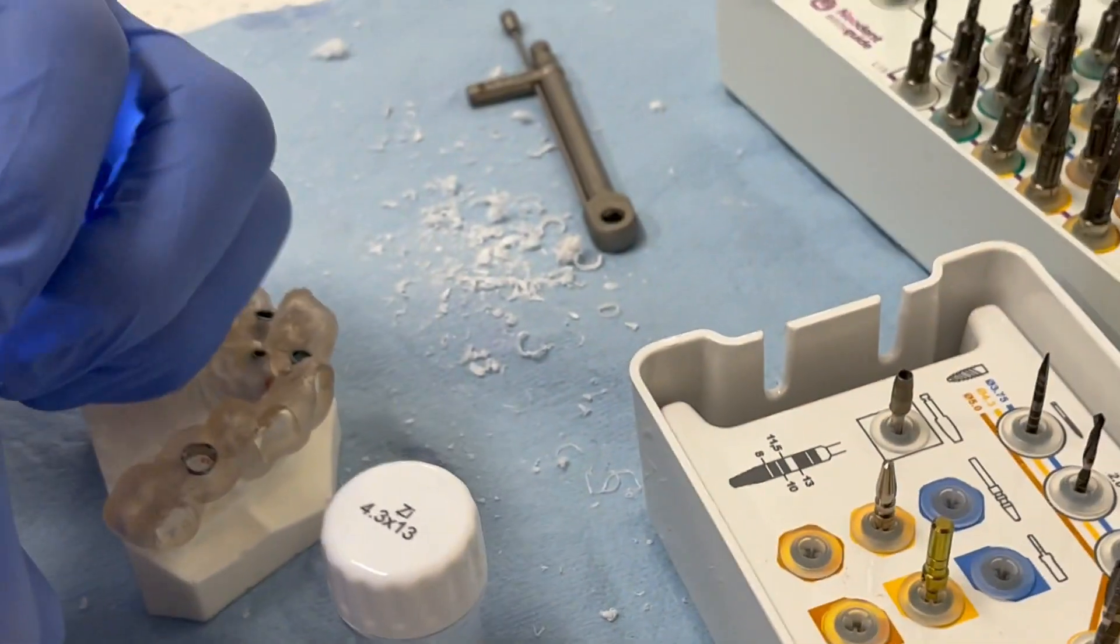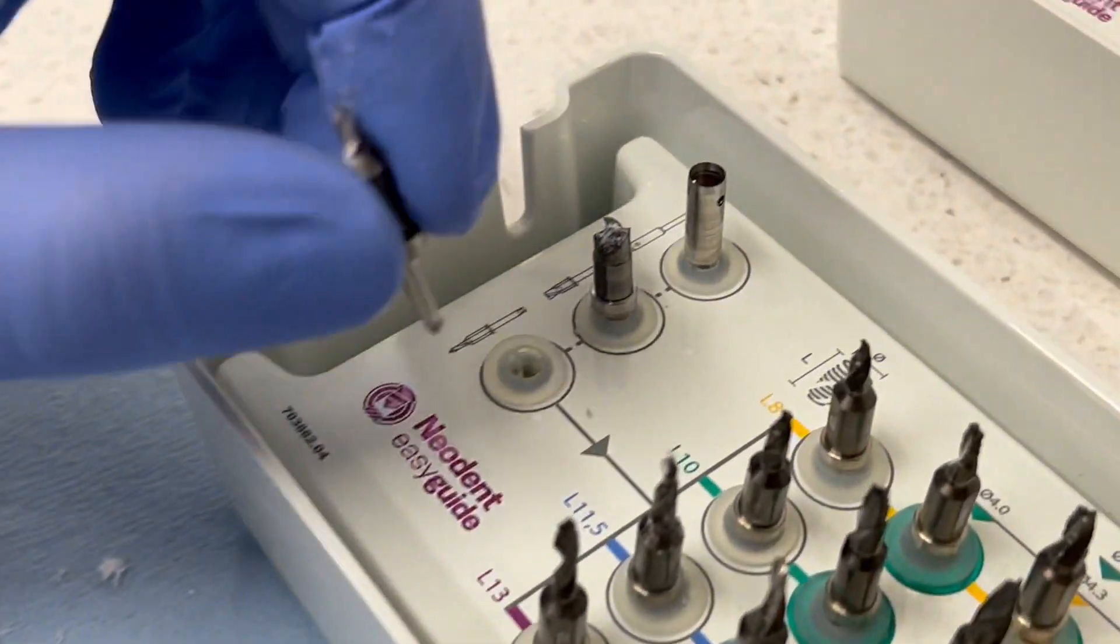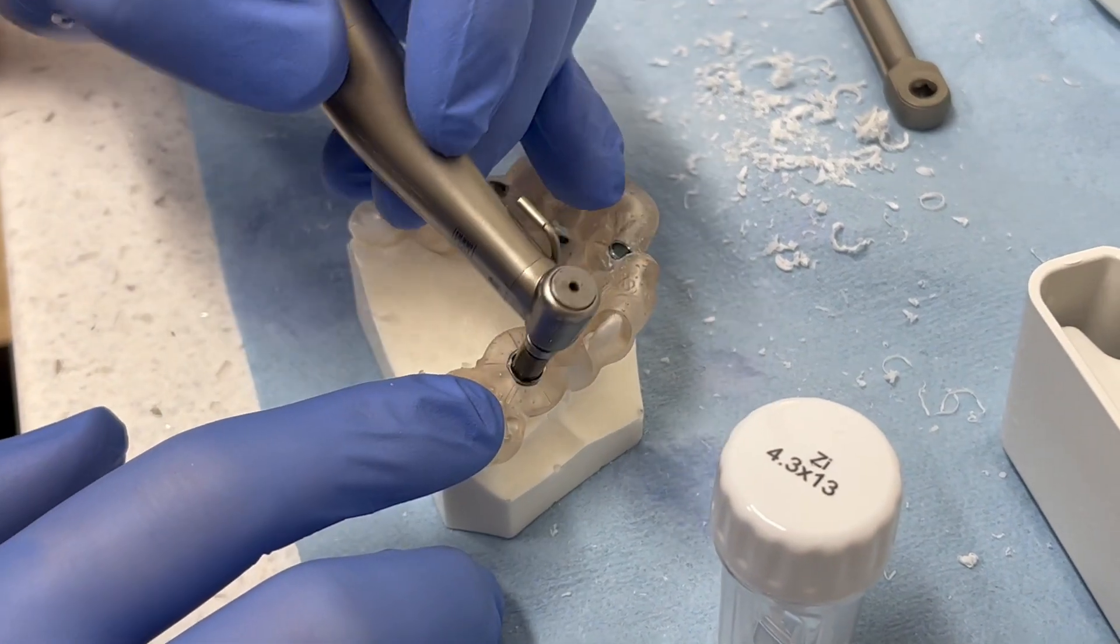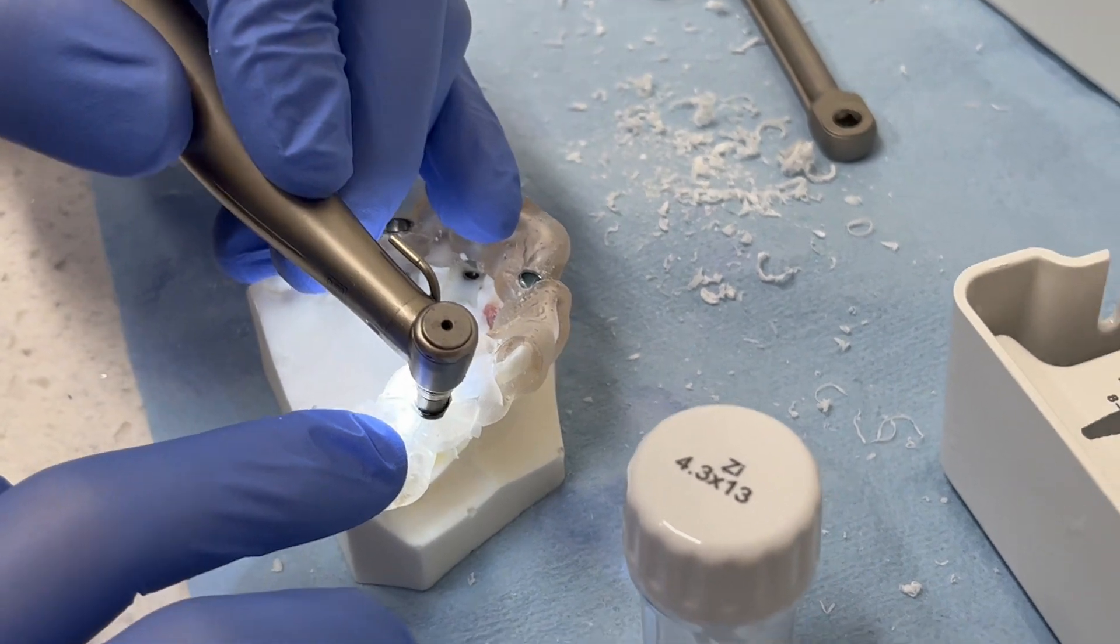And now we have room for our next drill, our little 6-0 kind of starter drill, to have room for the cylinder to slide down and engage into that bone.